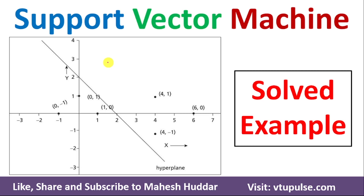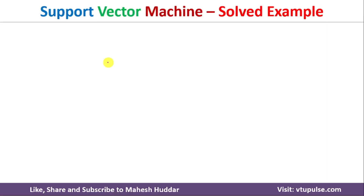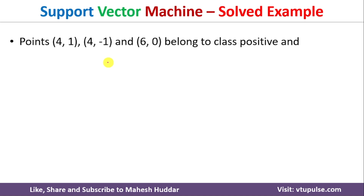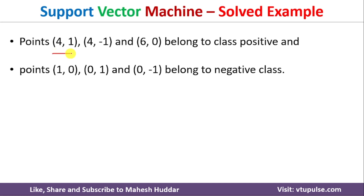Hi, welcome back. In this video I will discuss how to draw a hyperplane for a given dataset in Support Vector Machine with a simple example. We have been given a dataset with three positive examples and three negative examples: (4,1), (4,-1), (6,0) are the positive examples; (1,0), (0,1), and (0,-1) are the negative examples.